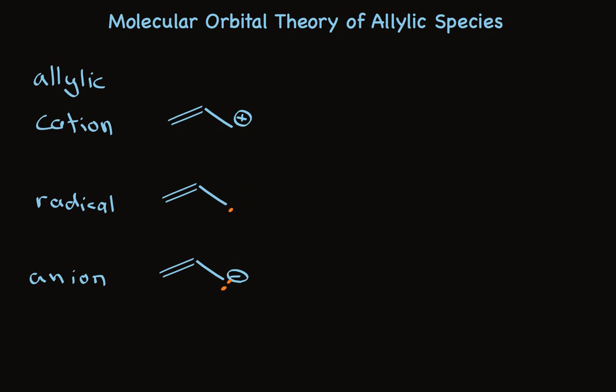These are all allylic species—cation, radical, or anion—and they have special properties, including being especially stable.